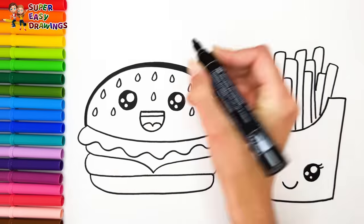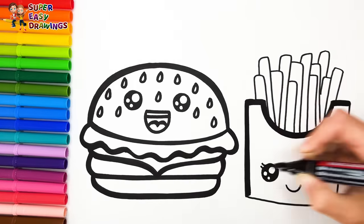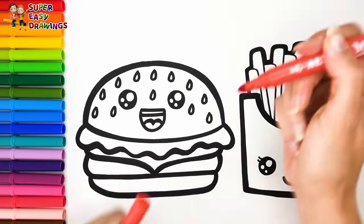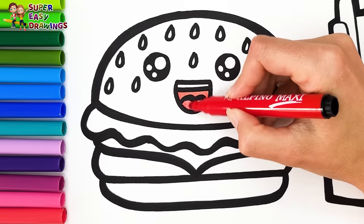Now I'm going to use this black marker to make this beautiful drawing more visible. Let's start coloring. Let's color the hamburger. I used two different red markers for its mouth.